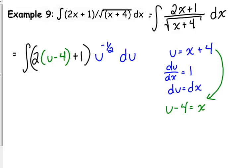Okay. We good with that. Because, okay, the top, I replaced my x with u minus 4. The bottom, what was under the square root, was my u.